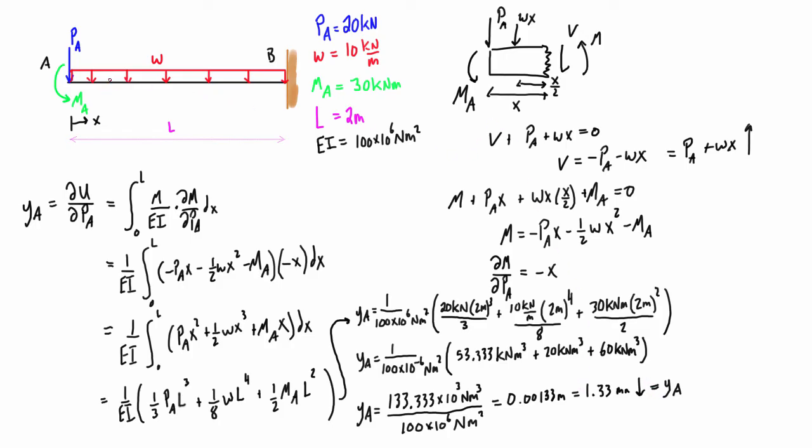Now you can compare this if you want using method of superposition and maybe tables or something. You can find the deflection caused on a cantilever beam just due to the distributed load, just due to the point load, and just due to applied moment. Add them all up together and you're going to see that you're going to get this exact same answer.